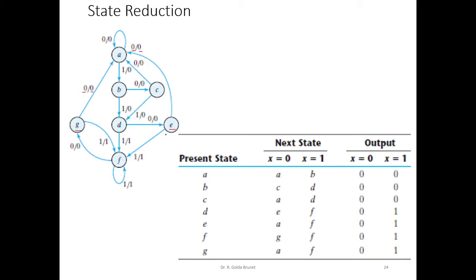The transition from states E and G upon input 0 is the same — they transit to state A and output 0. Similarly, when we get a 1 as input from E we transit to F and output 1. And from G if we get a 1 as input we also go to state F and output 1. So these two actions are one and the same. For all inputs, if the behavior of the states is the same — that is, their transitions as well as the outputs are the same — then we can claim those states are equivalent.